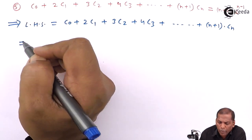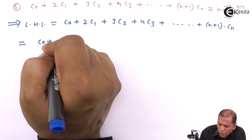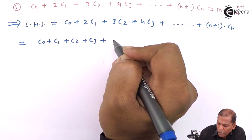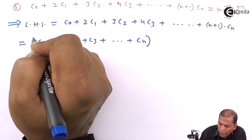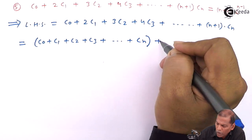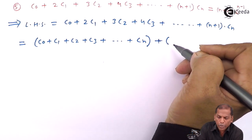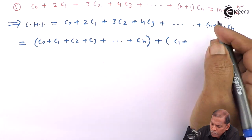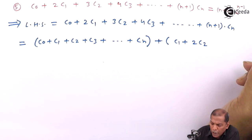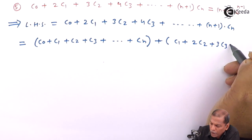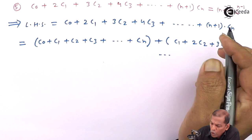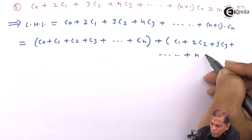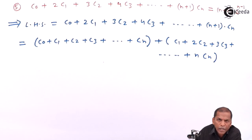The next step is to write C₀ plus C₁ plus C₂ plus C₃ up to Cₙ in one bracket, plus the remaining terms — which are C₁ plus 2C₂ plus 3C₃, going on, plus the last term n·Cₙ — in a second bracket.